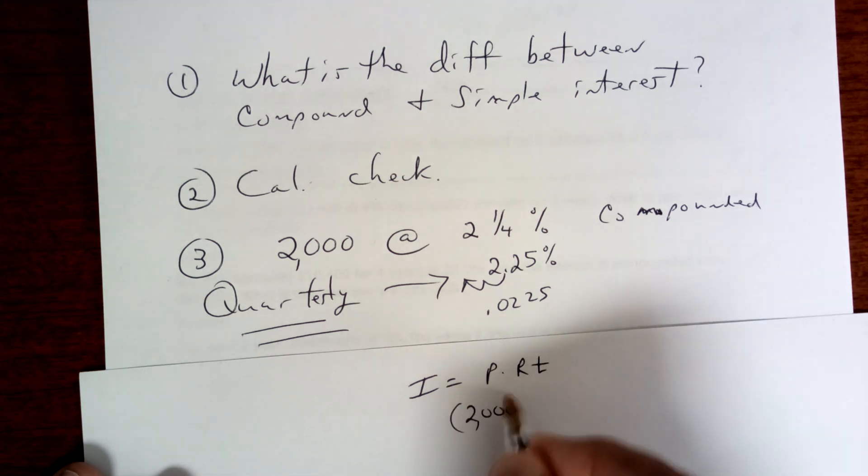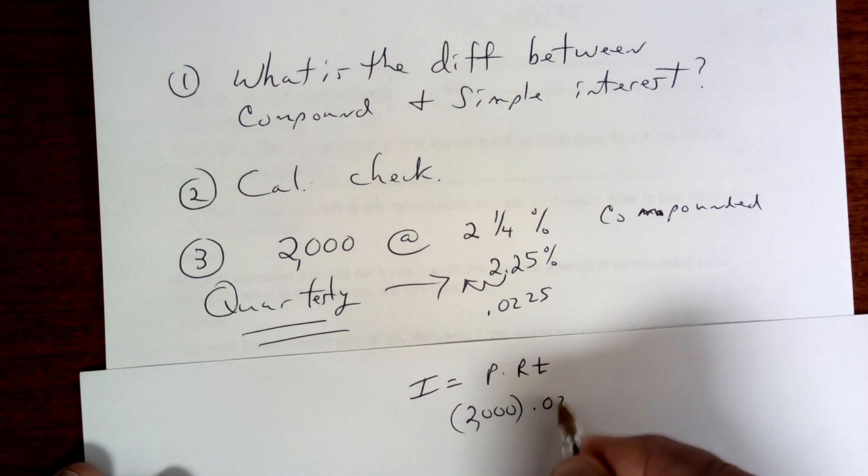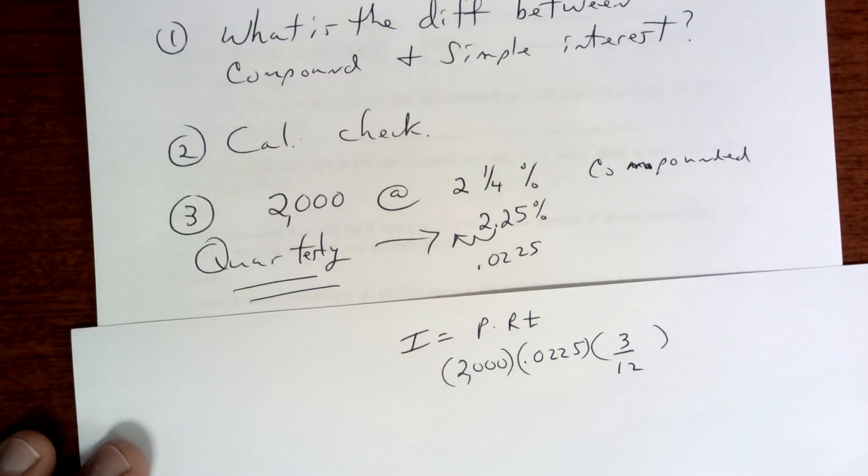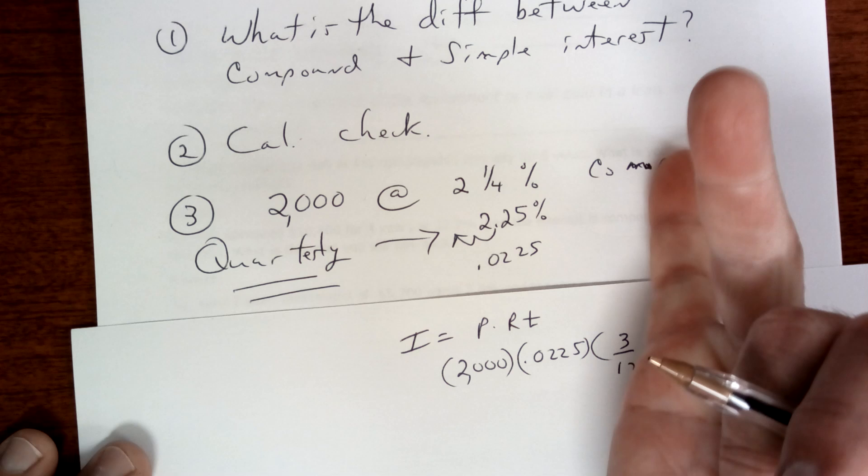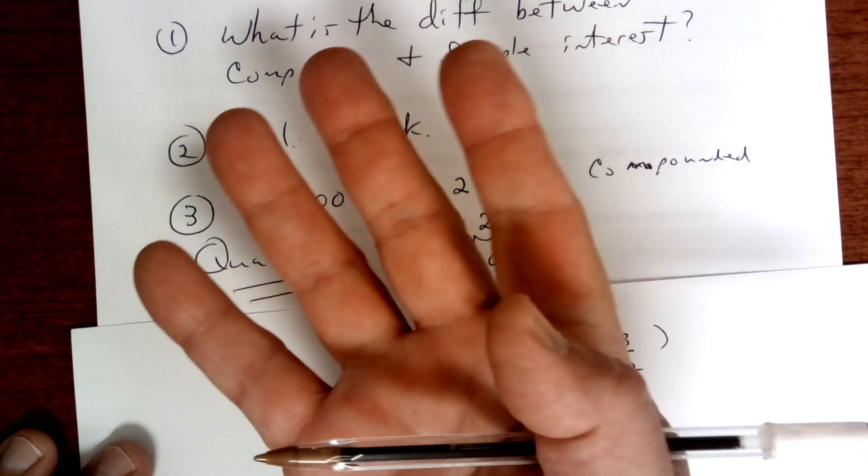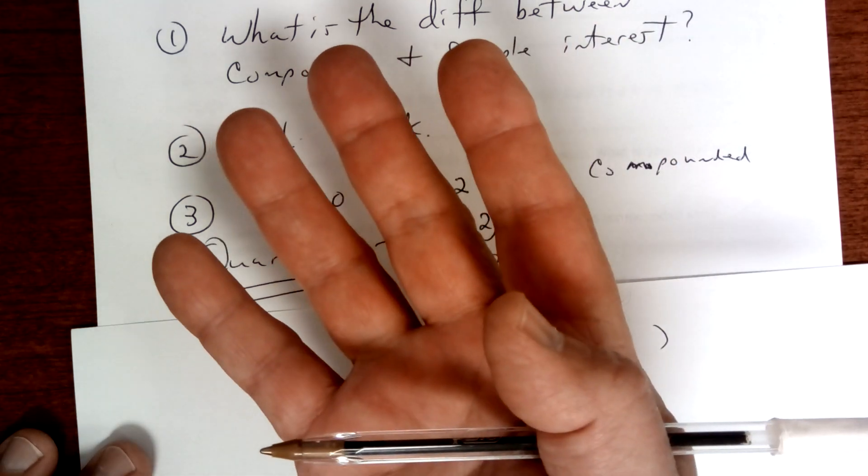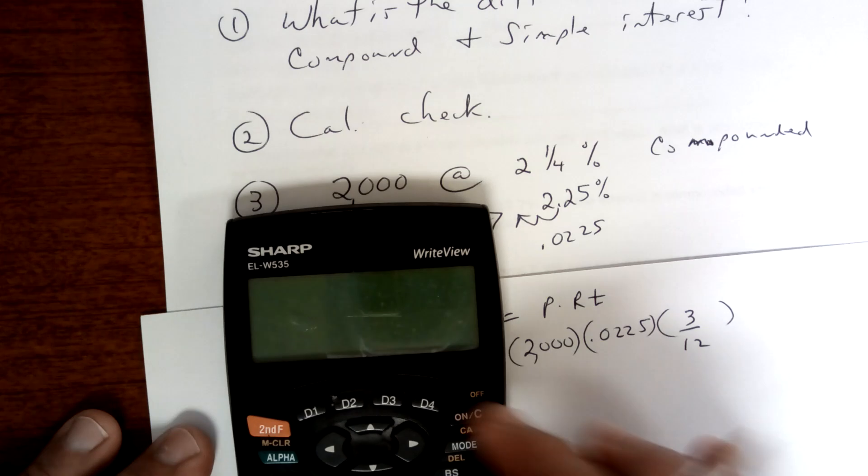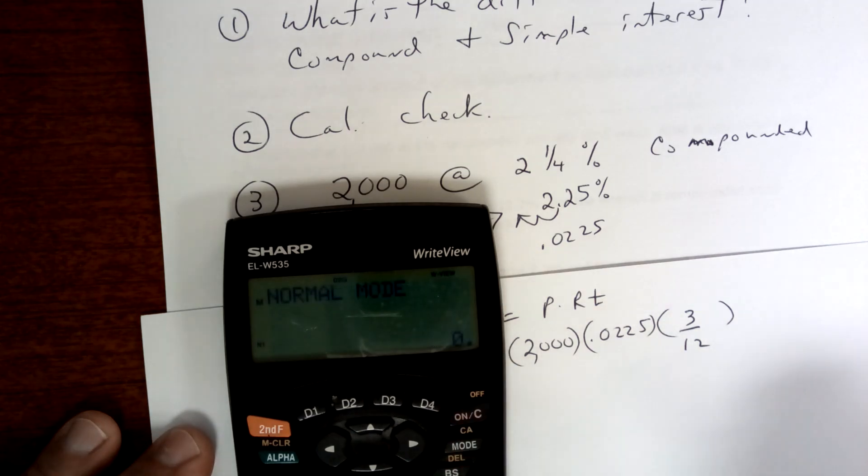So you're going to say interest equals principal times rate times time. The principal is $2,000, the rate is 0.0225, the time is three months out of twelve. Because it's quarterly, every three months: 3, 6, 9, 12 - four times a year, quarterly, every three months.